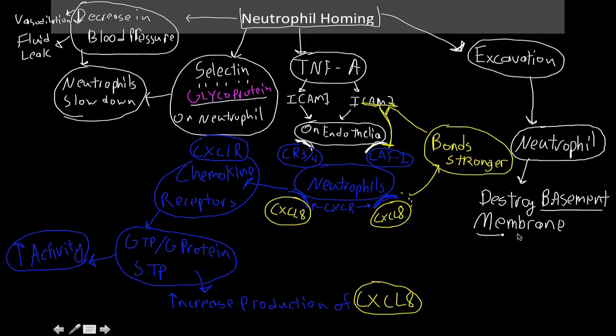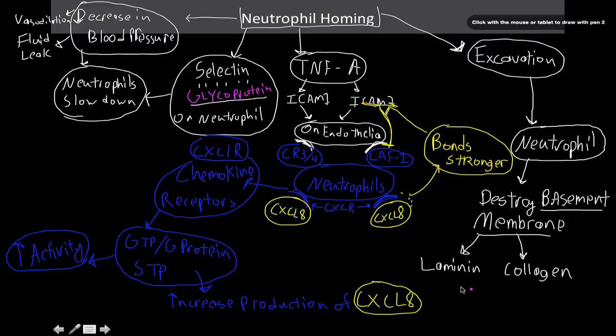The basement membrane is made up of two main proteins, laminin and collagen. How are these two proteins destroyed? Really by the use of degranulatory enzymes. I'm going to say it destroys via enzymes. Neutrophils, the process of them going from the bloodstream to the tissue site is damaging in its own right. That's something I think is really interesting to consider. This is why we have so much scarring and why inflammatory diseases hurt so bad, is because we're literally tearing apart part of our own body just to make it a pathway for the neutrophils to get where they need to go.